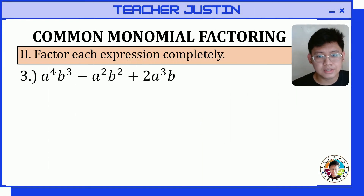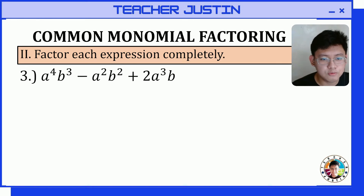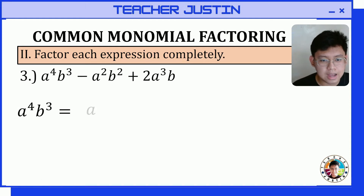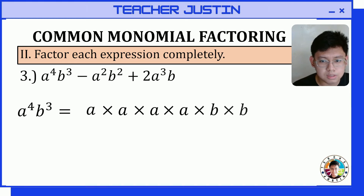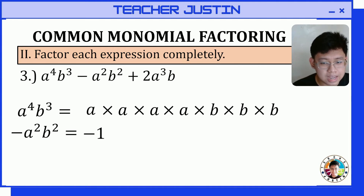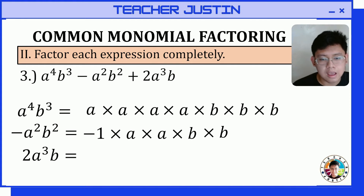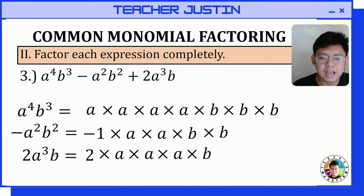Let's factor the third item: a raised to 4 times b raised to 3, minus a squared b squared, plus 2a raised to 3 times b. Let's get the prime factors of each term. For a⁴b³, we have a times a times a times a times b times b times b. For negative a²b², we have negative 1 times a times a times b times b. For 2a³b, the prime factors are 2 times a times a times a times b.